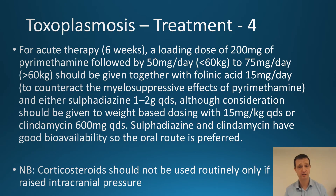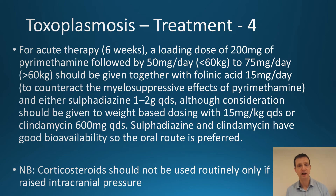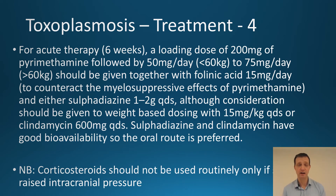The acute therapy is for six weeks: a loading dose of 200 mg of pyrimethamine, followed by 50 to 75 mg per day. This is given together with folic acid 50 mg per day to counteract the myelosuppressive effects of pyrimethamine. You then add either sulfadiazine 1 to 2 grams four times a day, or clindamycin 600 mg four times a day. Both can be given orally; indeed, sulfadiazine and pyrimethamine tend to only be available in oral preparations.